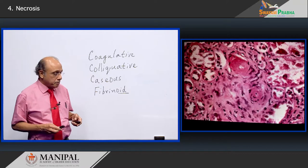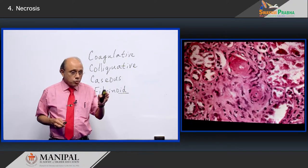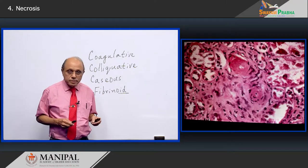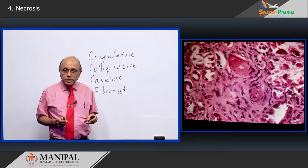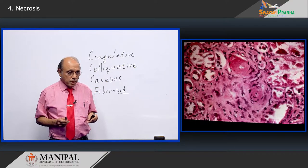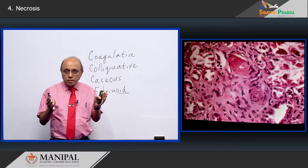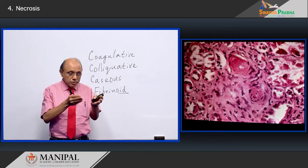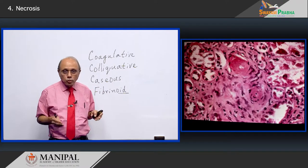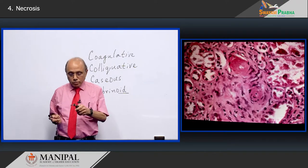Here is another picture showing two vessels affected by fibrinoid necrosis. These two blood vessels are thickened because of the pink material that has accumulated, and in the center you can see a little bit of the lumen — there is considerable narrowing of the lumen.